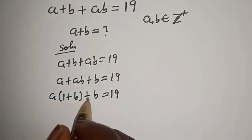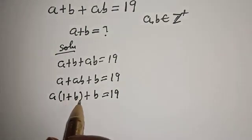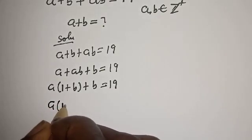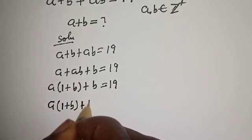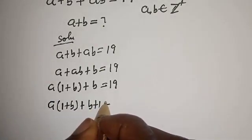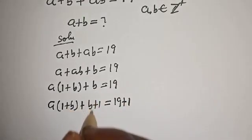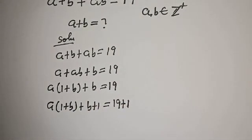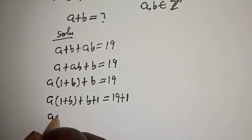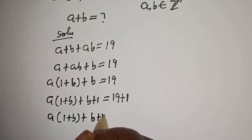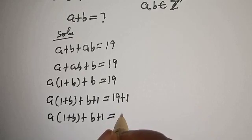Here is 1 + B, but here is just B. So we need to make it 1 + B. Let's add 1 to both sides: A(1 + B) + B + 1 = 19 + 1, which equals 20.